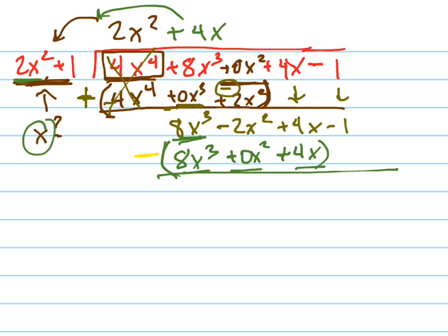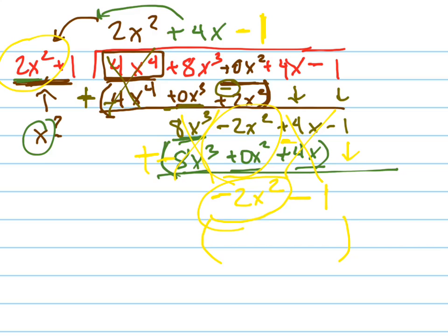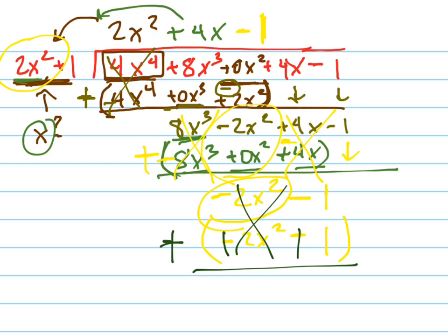Switching to yellow. When I subtract and distribute this negative in: that's gone, that becomes negative 2x squared, and that's gone. Don't forget the minus 1. Now when I divide negative 2x squared by 2x squared, I get negative 1. Multiply it through — don't forget parentheses — you get negative 2x squared minus 1. And I'm subtracting all of those, so I'm going to get 0.